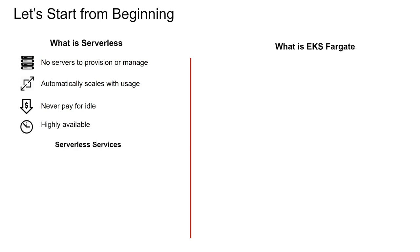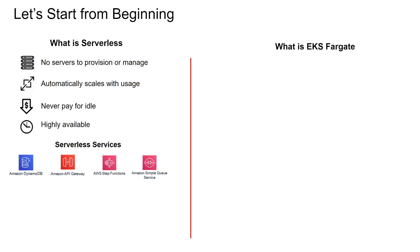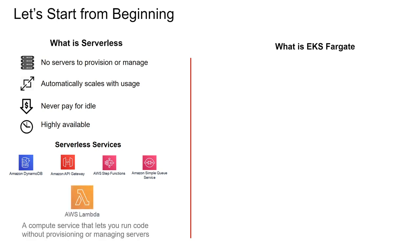There are a lot of serverless services outside of Lambda, because any AWS service that satisfies these four properties is a serverless service. Some of these services include DynamoDB, API Gateway, Step Functions, and Amazon SQS. However, AWS Lambda is the crown jewel of serverless — a compute service that lets you run code without provisioning or managing servers.